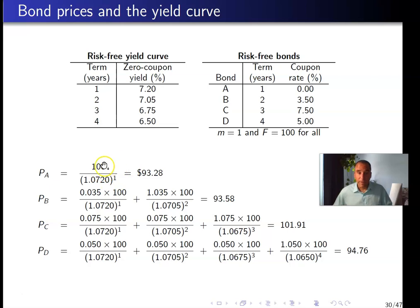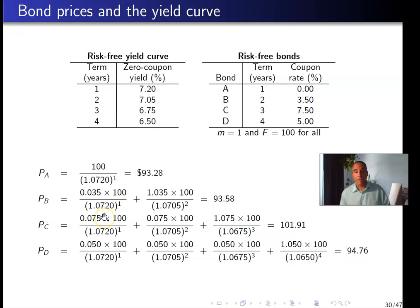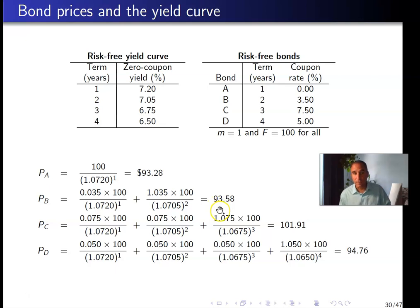For Bond A, there is no coupon, so the face value received in one year is discounted at 7.2%, giving a price of $93.20. For Bond B, one coupon payment after one year is discounted at 7.2%, and the coupon plus face value received in two years is discounted at 7.05%, giving a price of $93.58.